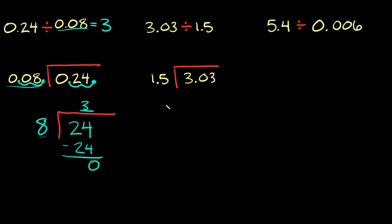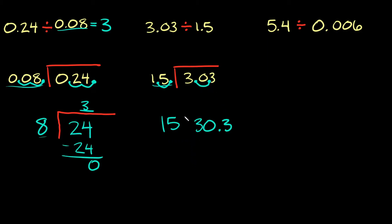The second step again is just turning your divisor — this number on the outside — into a whole number by simply moving the decimal to the end. We move it just one time. So we come to our dividend and move that decimal one time as well. 1.5 turns into 15, and 3.03 turns into 30.3 because we moved the decimal just one time over.